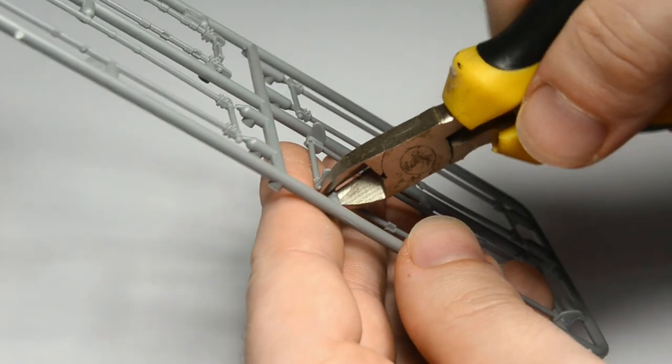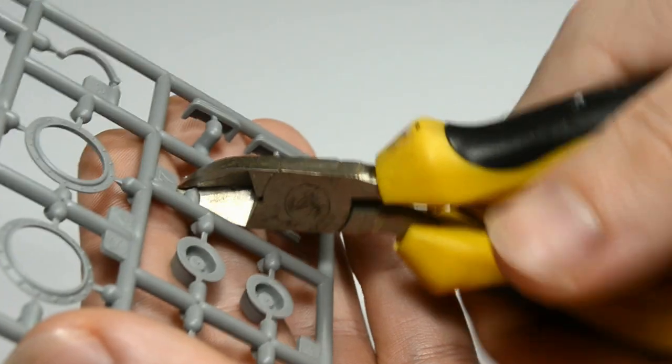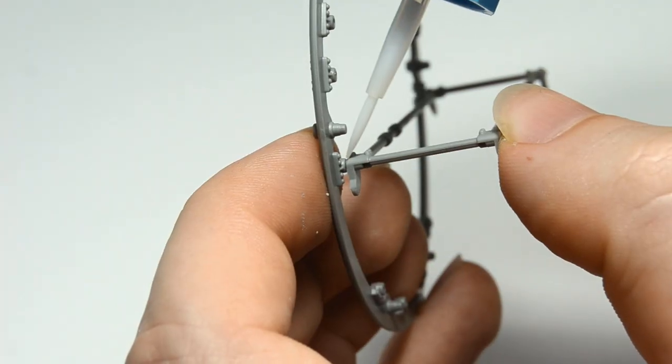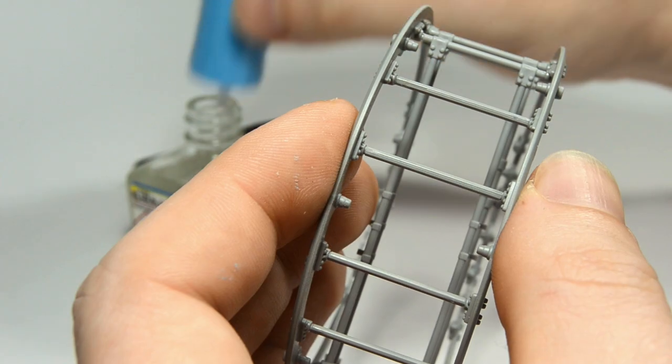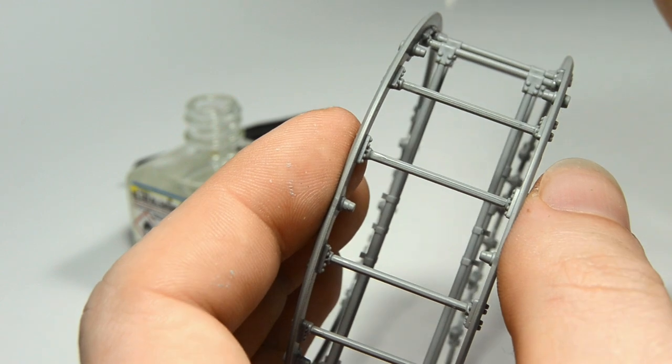Okay I'll need a few more parts to build the mainframe of the tank. I glued it together with Mr. Cement S glue. It dries really fast and leaves no residue on the surface so win-win.